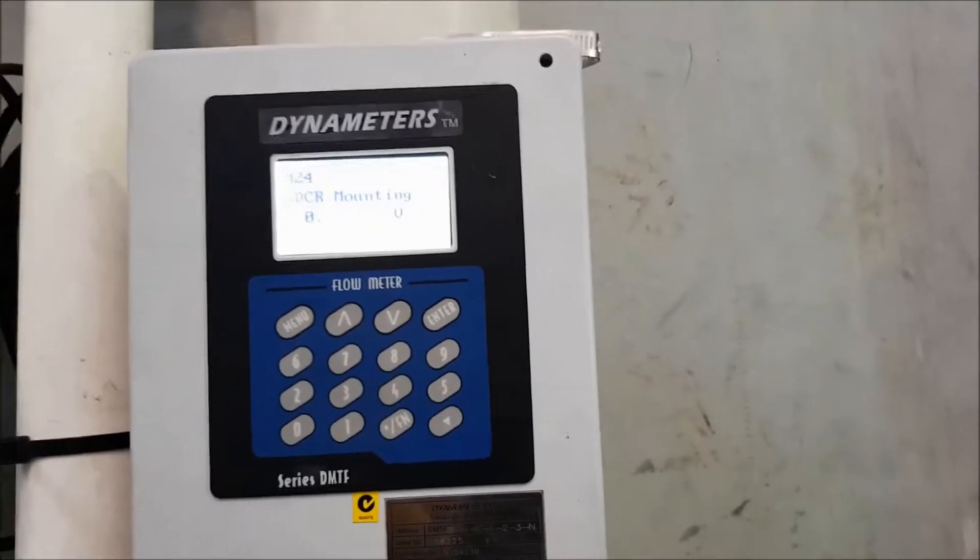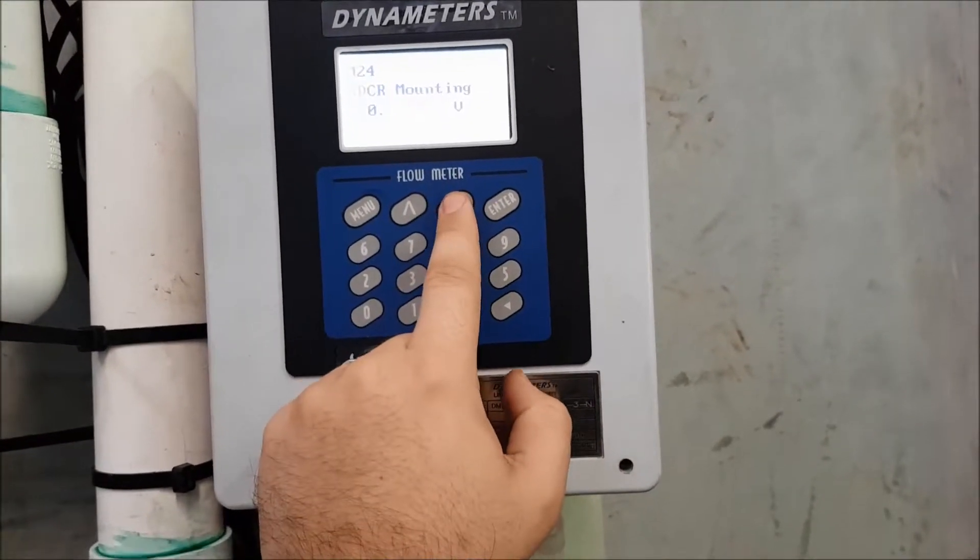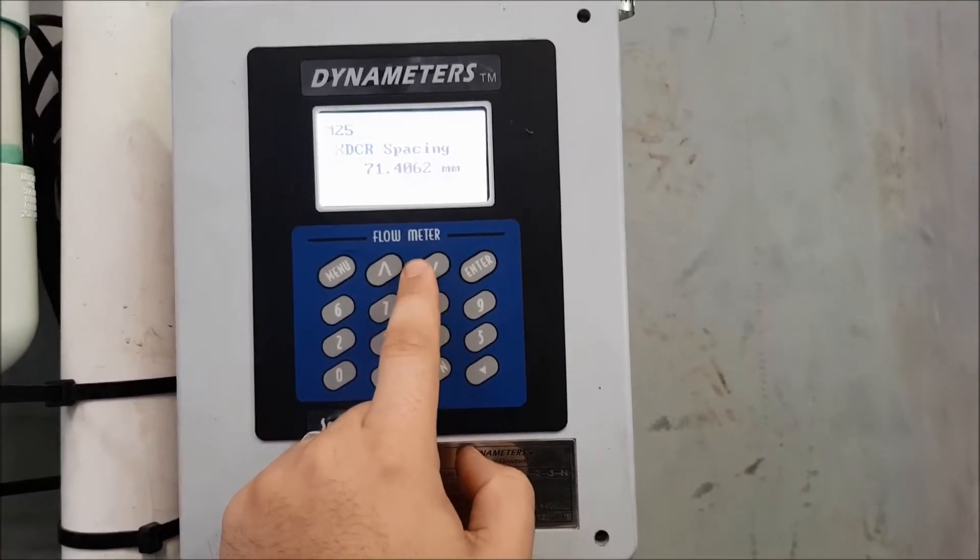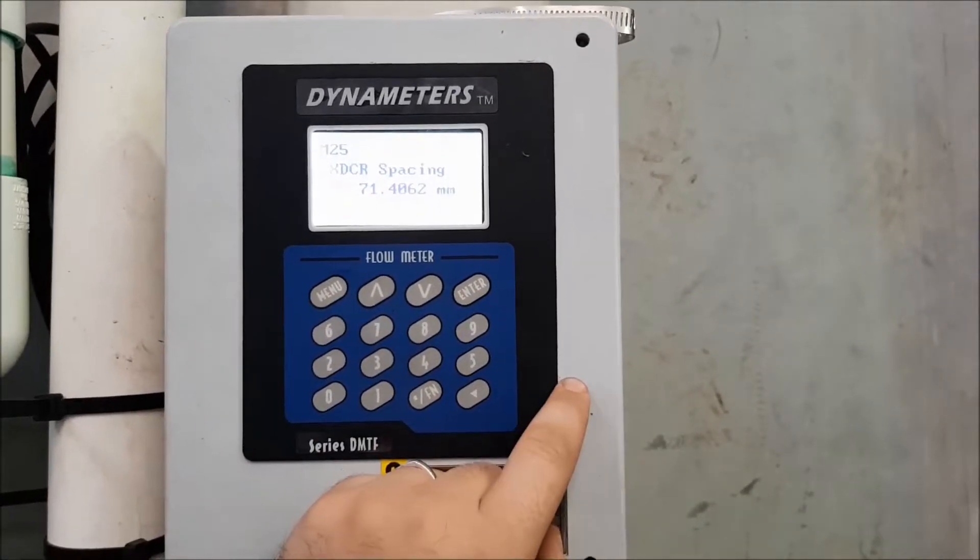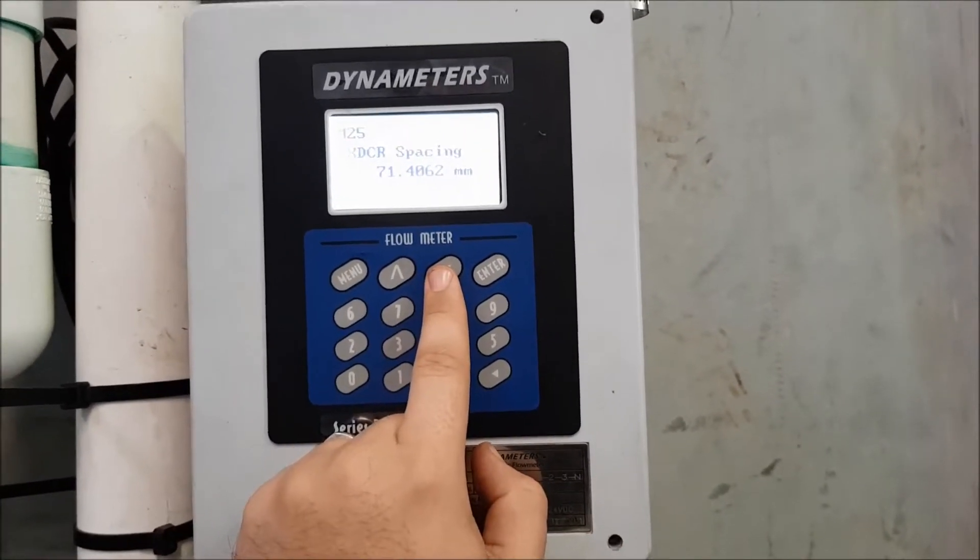Mounting method. V is the most common. There are other mounting methods, depending on what you're doing. V is what I'll be using in this case. And your spacing is then shown on menu 25. So this is the space that we need to set the transducers apart.